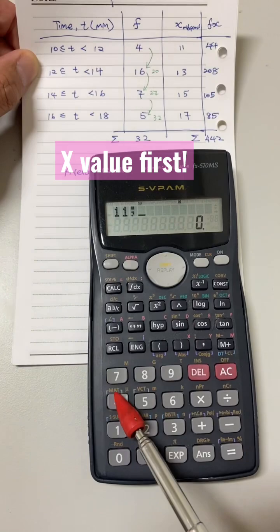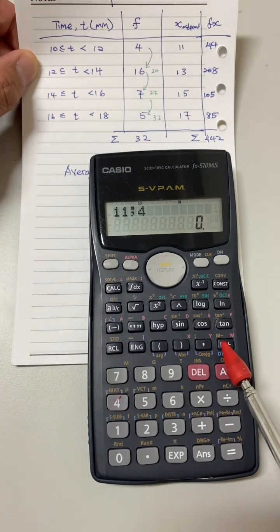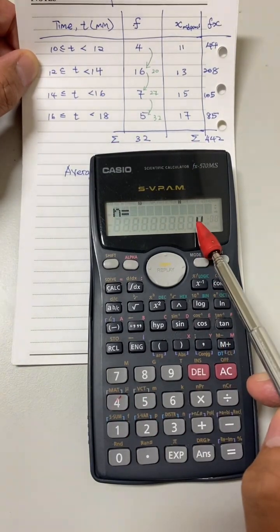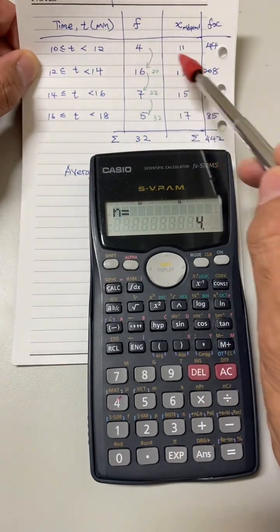Then, shift comma to get a semicolon. Then, the frequency, and press M plus, which is the first data.